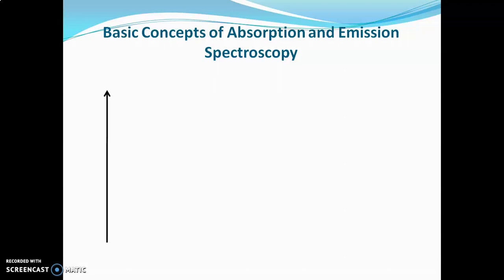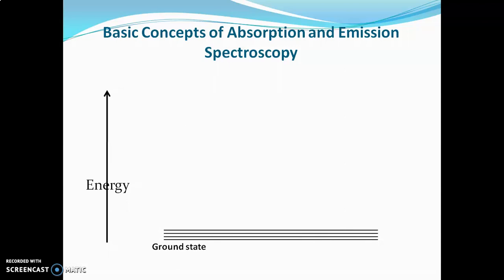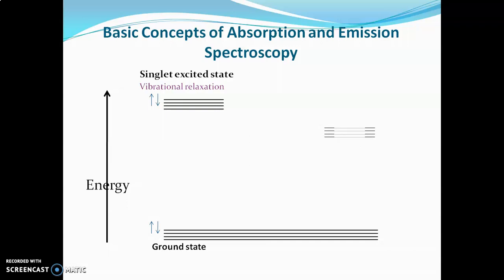When a molecule absorbs ultraviolet or visible light, its electron gets excited or promoted from the ground state to a higher energy state. In the ground state, the electrons are paired — their spin is anti-parallel. If in the higher energy state the electron spin remains anti-parallel, the excited state is called the singlet excited state. If the spin of the electron becomes parallel in the excited state, it is called the triplet excited state.